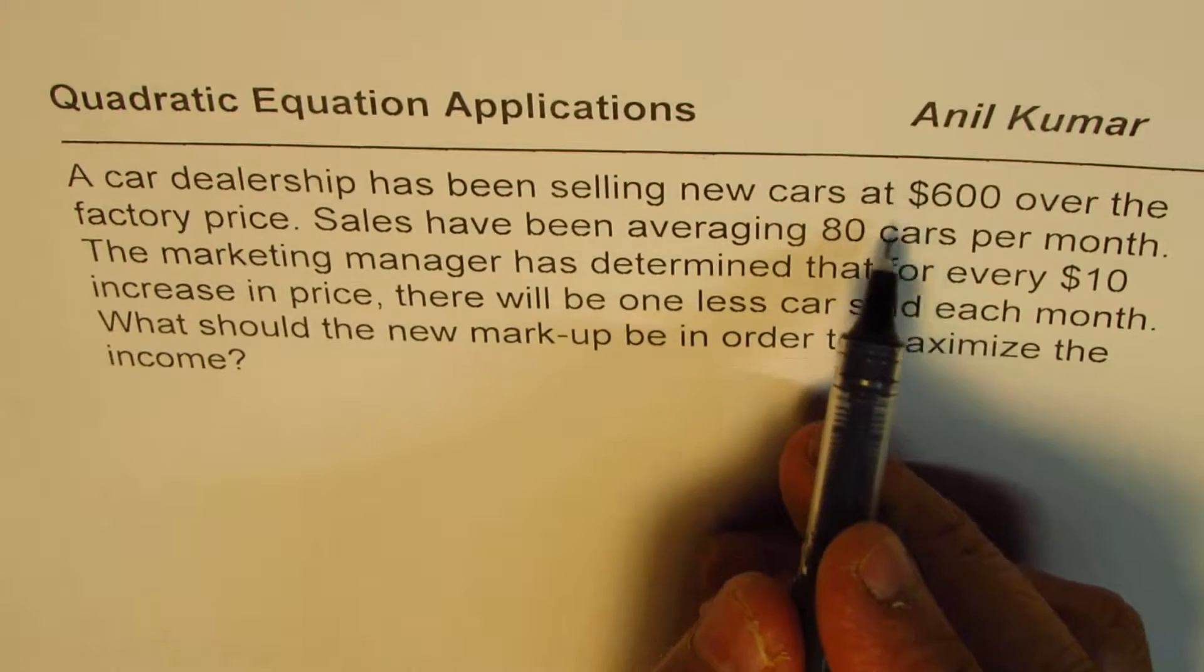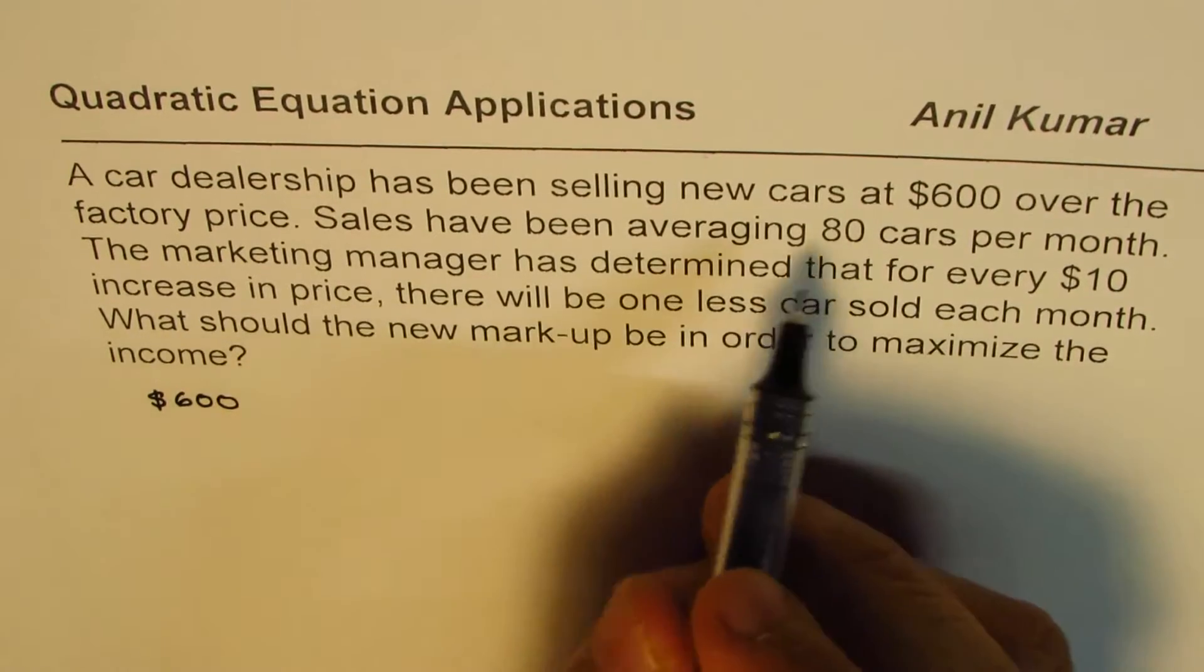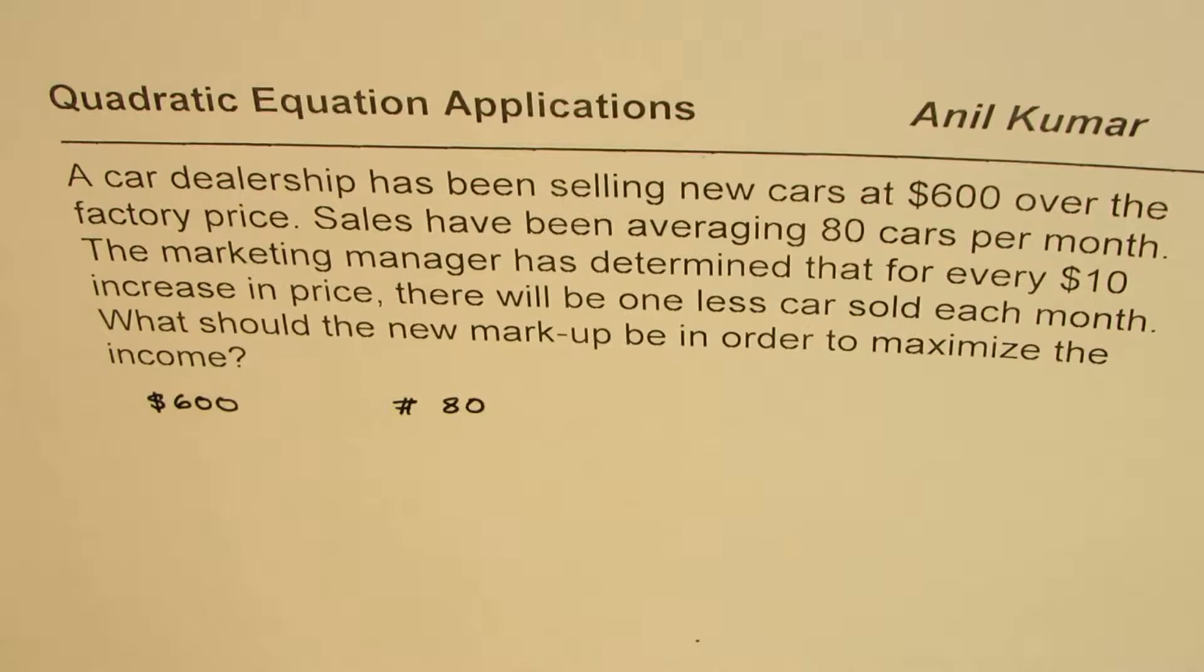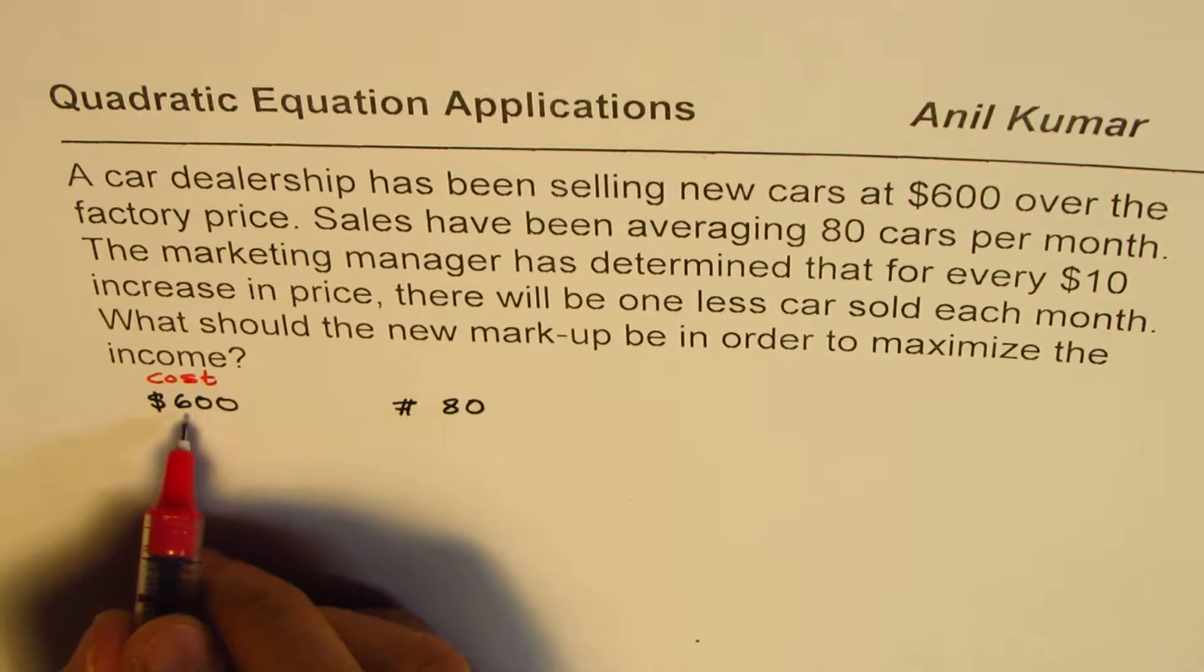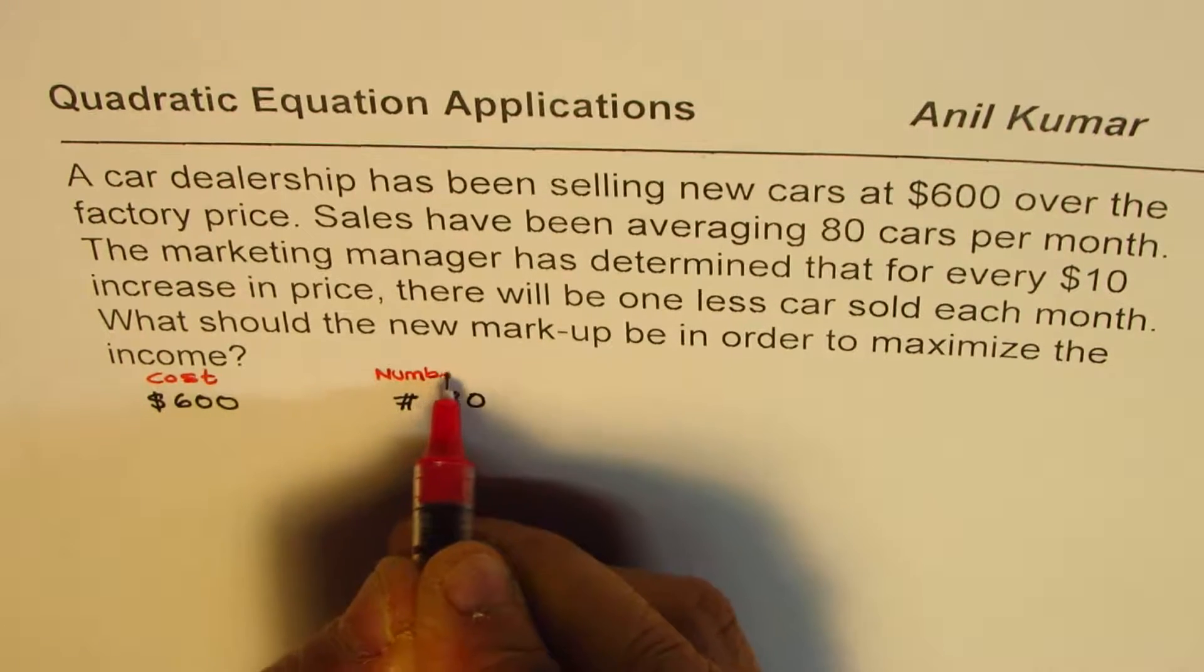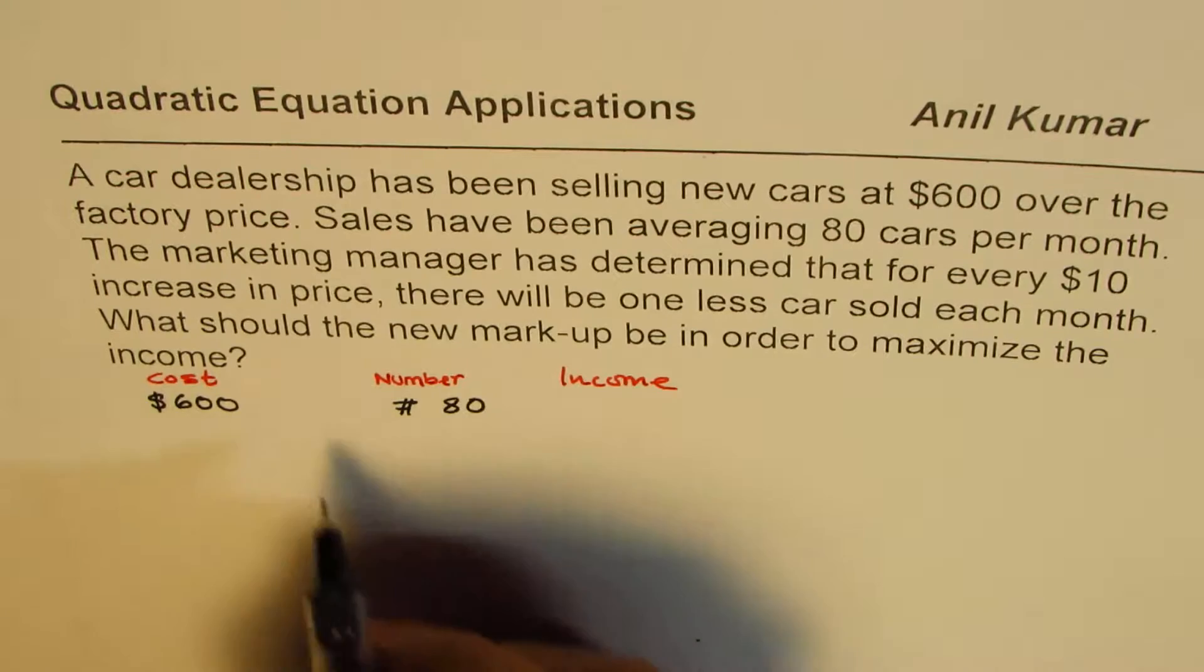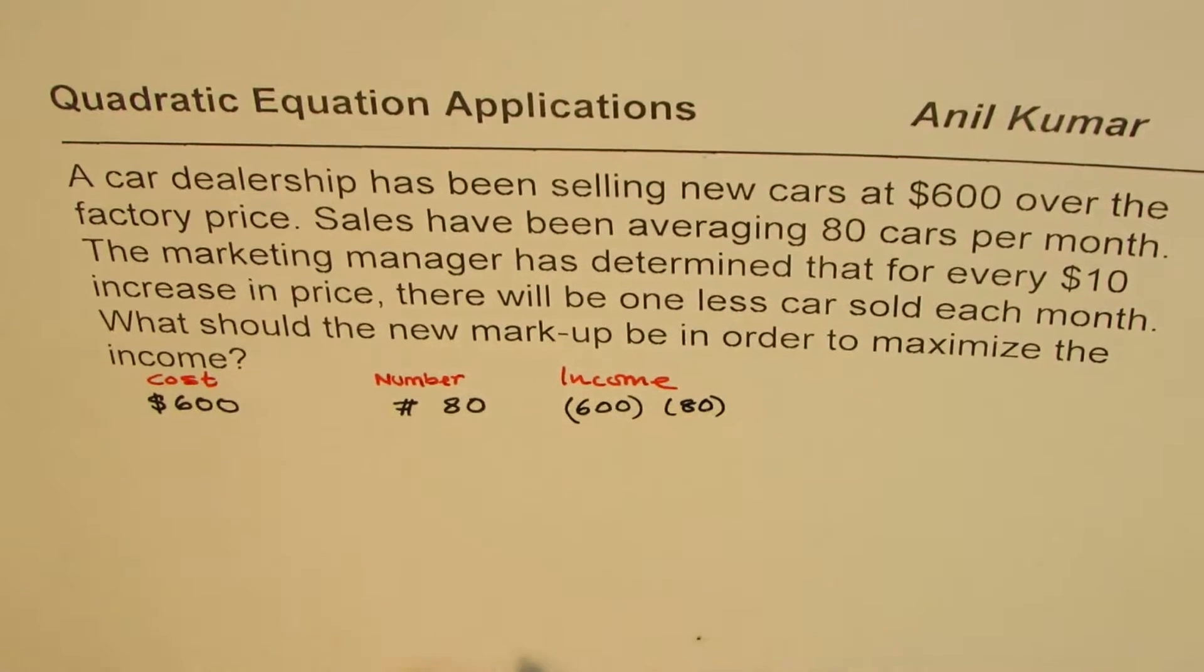What we're given here is that for $600 markup, if the markup is $600, average number of cars sold is 80. So if that is the cost, let me write here. If we have the selling price with markup of this much, then the number of cars is 80. And in that case, what is the income? Income will be product of these two. So income will be 600 times 80. That is what the income is going to be.